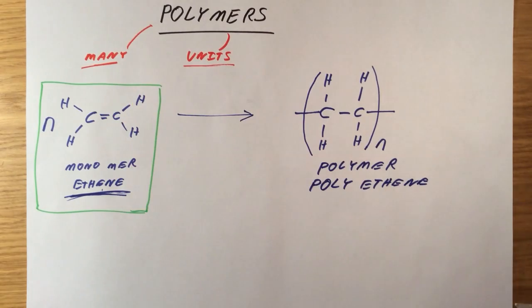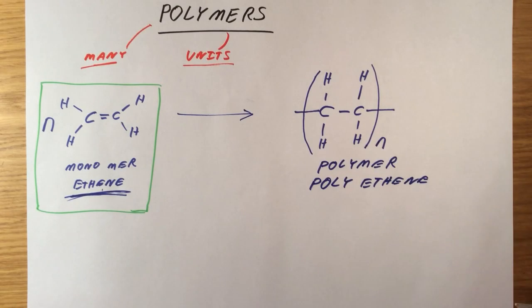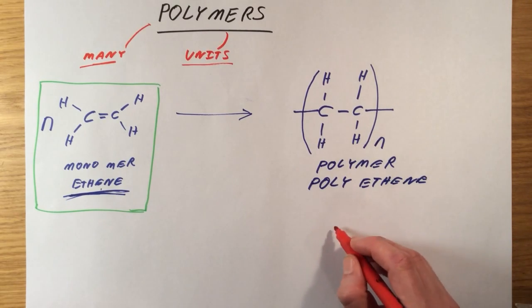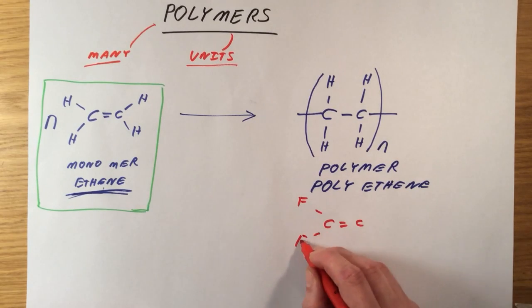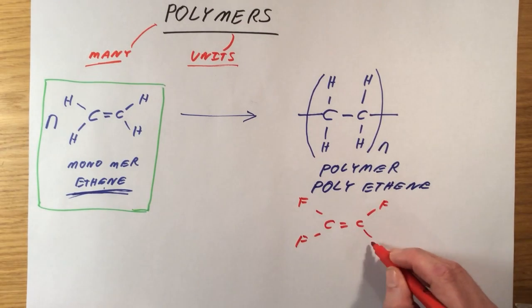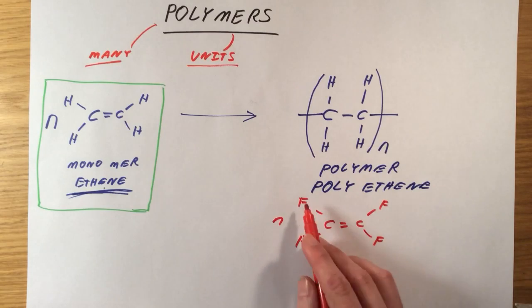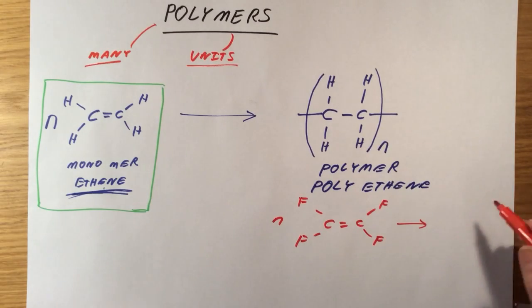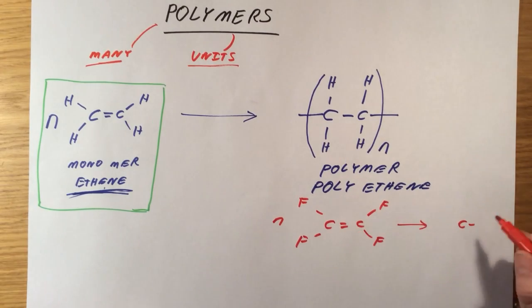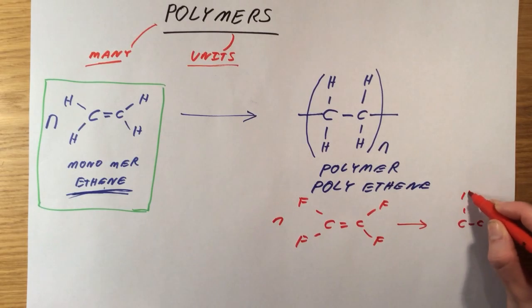Don't be thrown if you're given a different starting alkene. Let's say if we had this one. This is called tetrafluoroethene, so you've got four fluorine atoms attached to the carbon atoms. If you're going to draw the polymer formed from this, it's exactly the same idea again. The double bond breaks and forms a single bond.